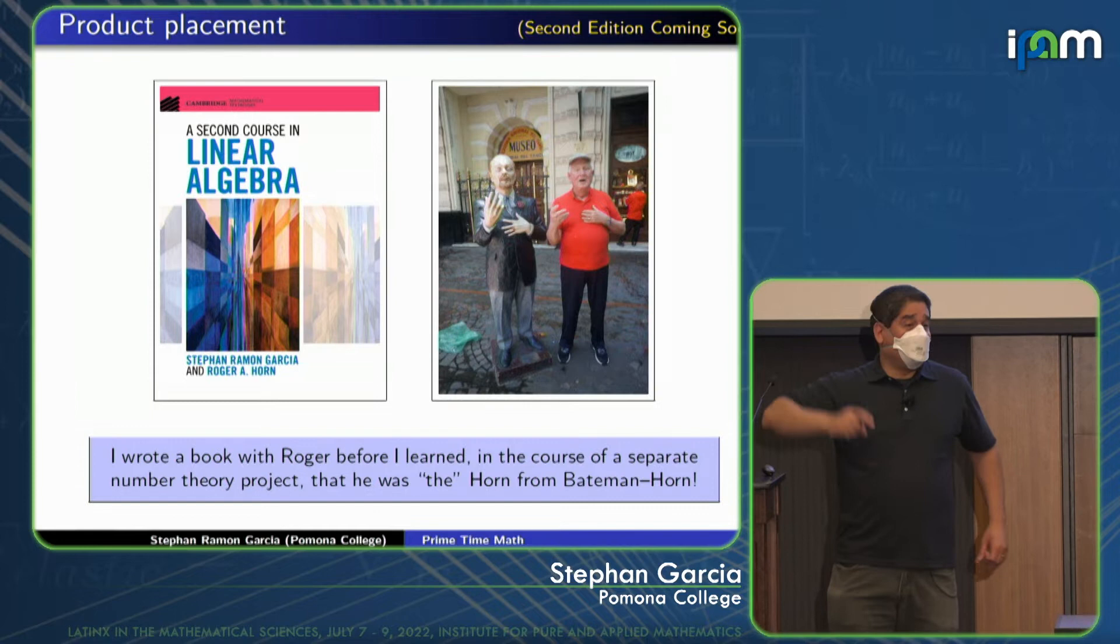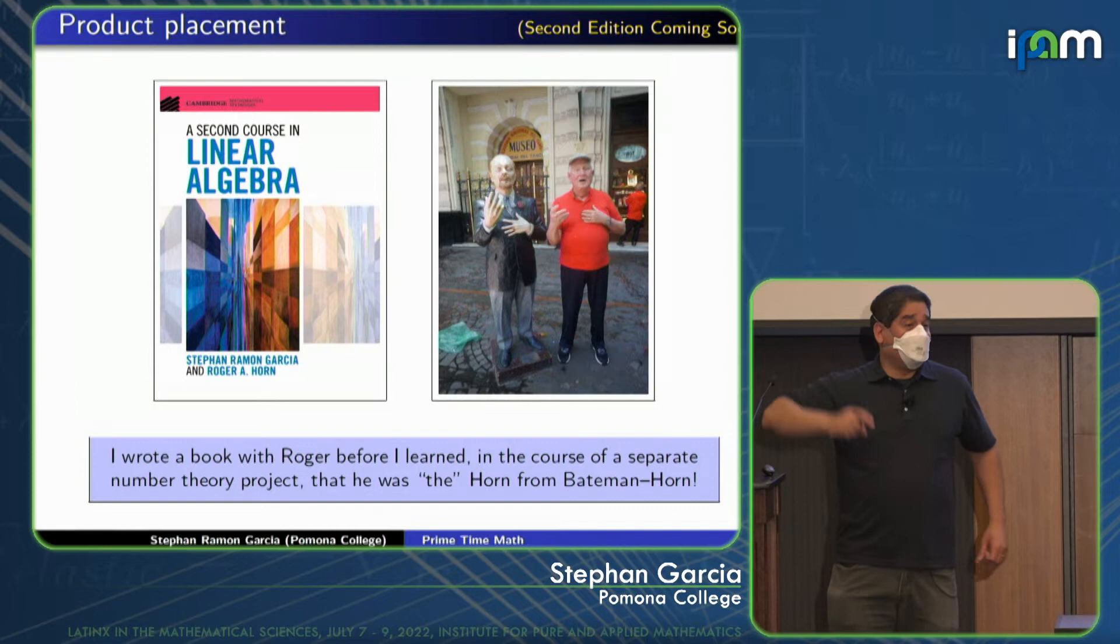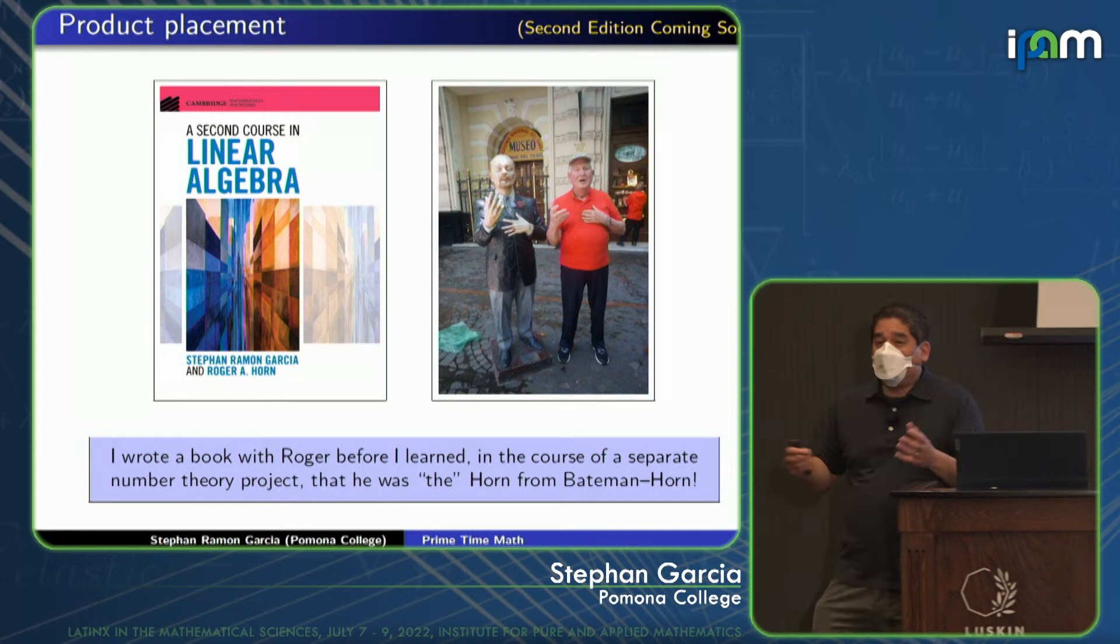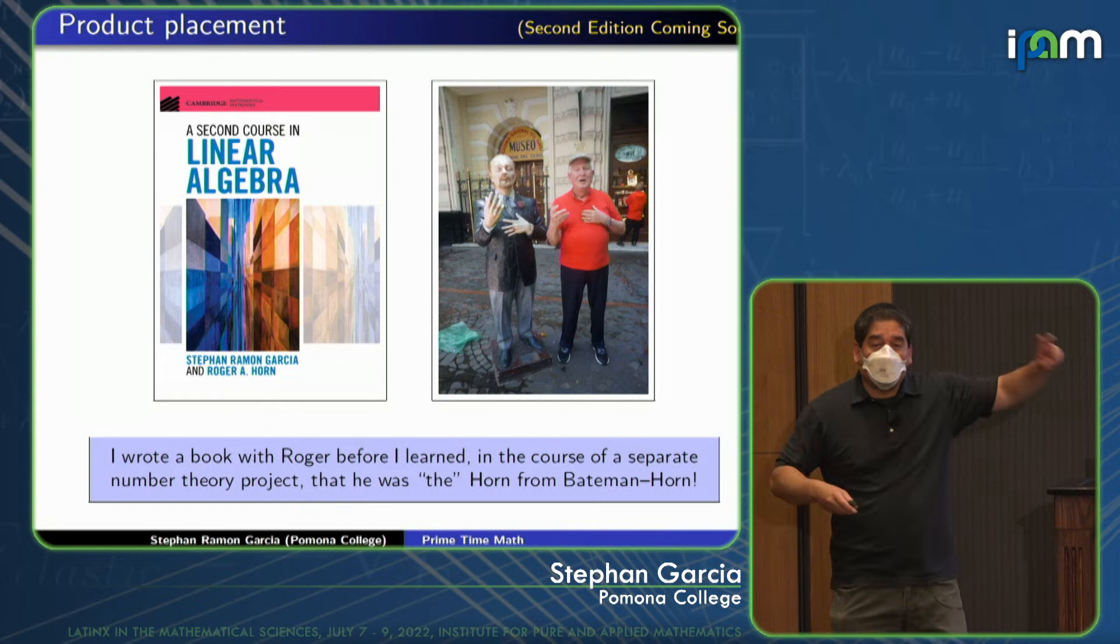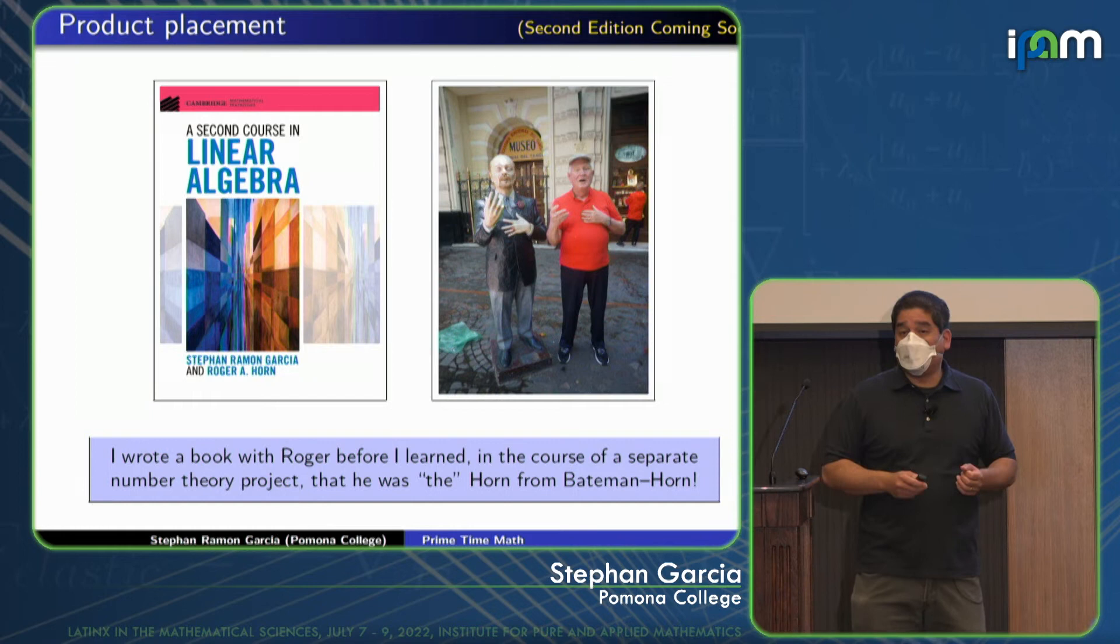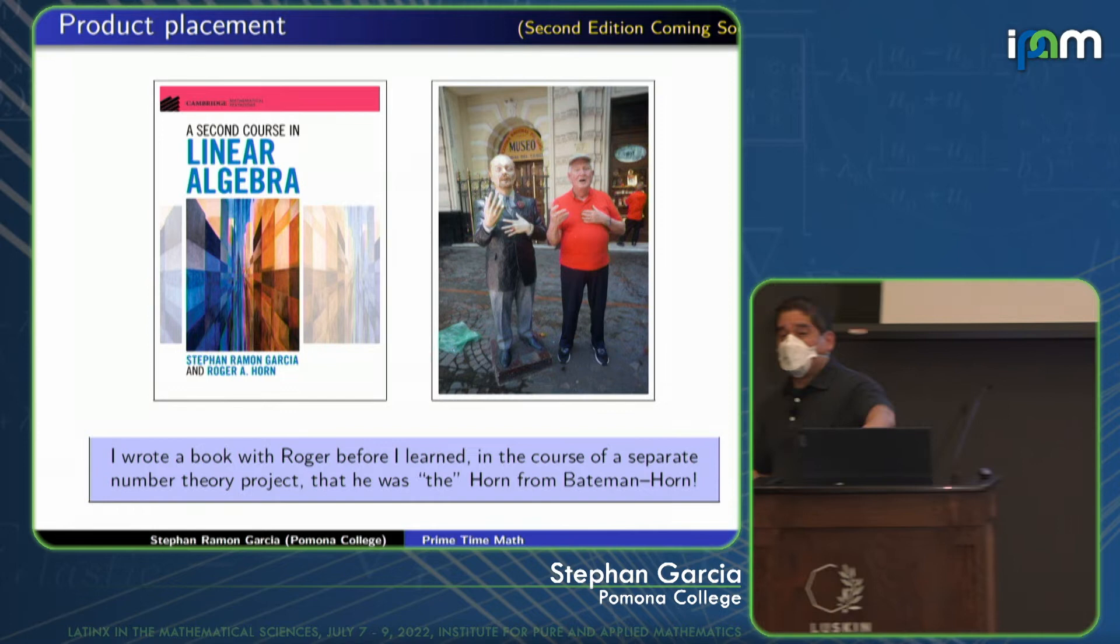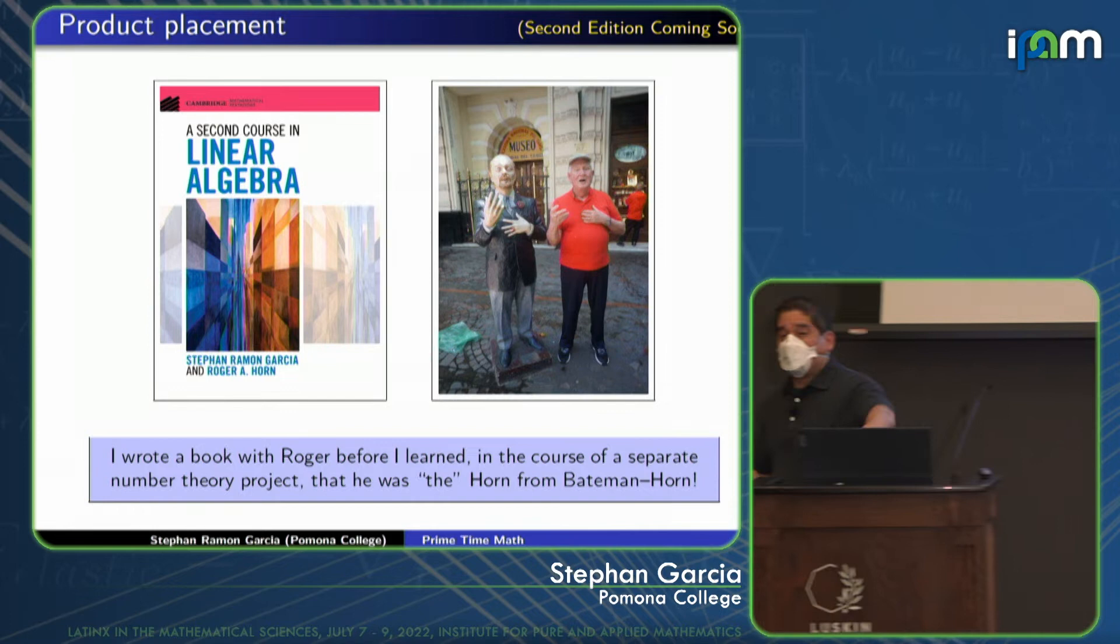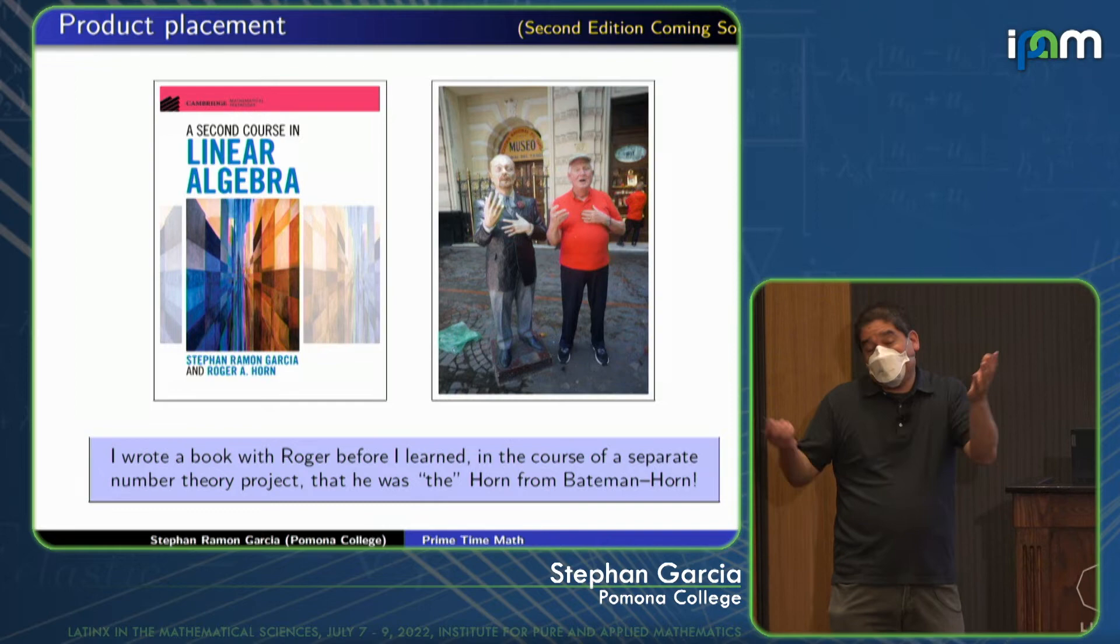There was an NSF-funded summer research program that Roger attended that was run by Bateman and it used the fancy thing called a computer. And it turns out that this ILLIAC computer, when you play around with punch cards and magnetic tape and whatever they did, allowed them to make some interesting conjectures. And this led to the so-called Bateman Horn conjecture. I bring this up for a product placement reason. I actually wrote a book with Roger Horn a few years ago on linear algebra. We've written eight papers over the last 10 years or so together. I have never met him in person, and I think it's likely I was never even ever on the same continent with him. So it turns out Roger only has two papers in number theory, both dating from the early 1960s from his RU. And so he is now known as a matrix theorist. Most of his colleagues, including me, didn't know that he is connected to this big conjecture in number theory that he made with Bateman when he was an undergraduate.